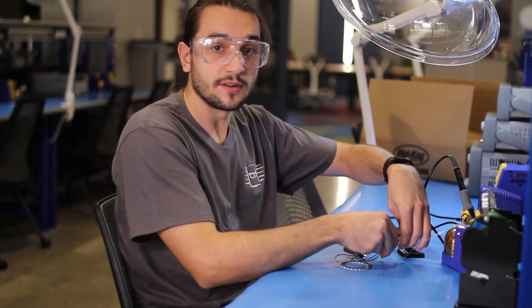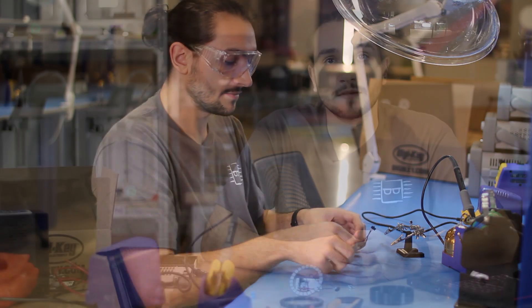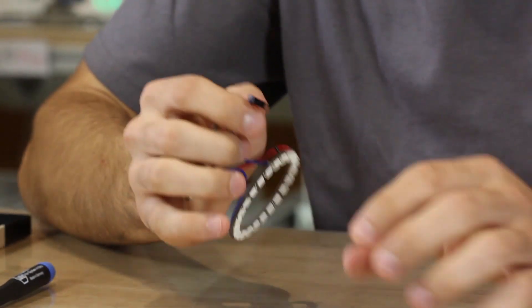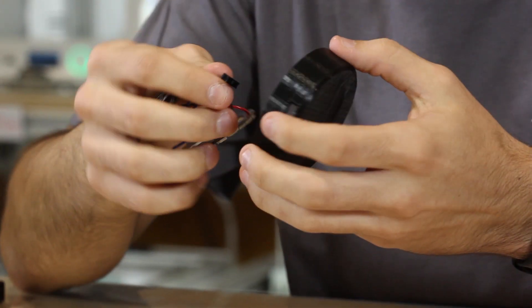And once all 5 wires are firmly soldered in place, the soldering is done. Now that we have everything soldered, we are going to put it into our 3D printed enclosure. We will start by putting the switch in. The switch is located in the back of the enclosure.